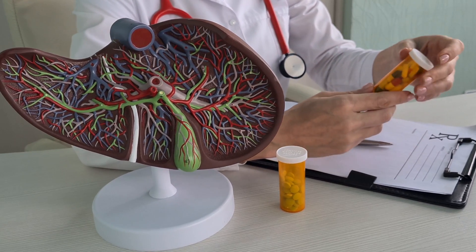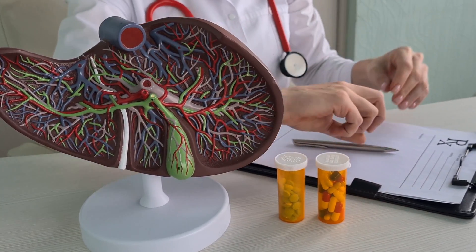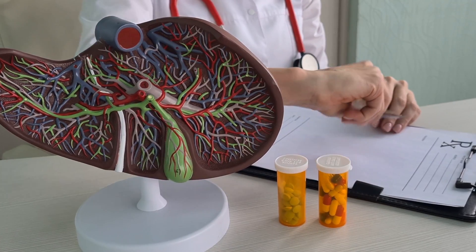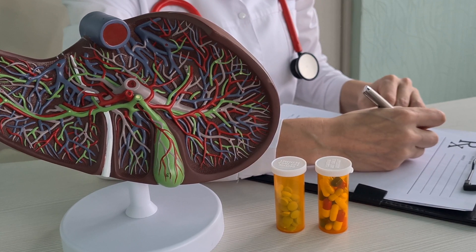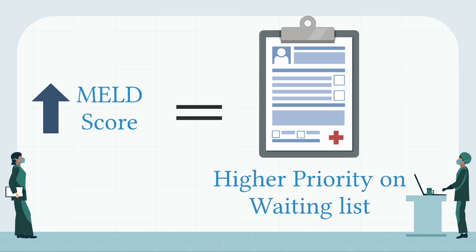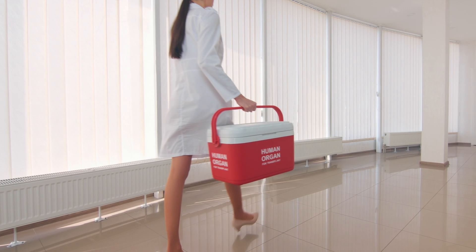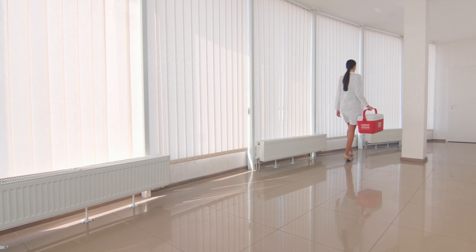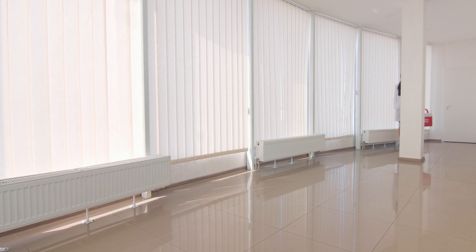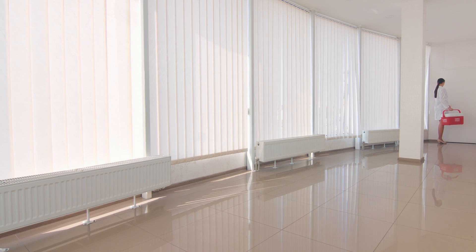Once you have reached the stage where transplantation is the only option, you will go through a multidisciplinary evaluation by a committee to determine a MELD, or Model of End Stage Liver Disease, score which will help determine the severity of the disease. Those with a higher score will be given a higher priority on the waiting list. If you are the highest priority, your healthcare team will be notified of the next available organ donor and sent to retrieve the liver — someone who has chosen to donate their organs after they have passed away in hopes of prolonging the recipient's life.